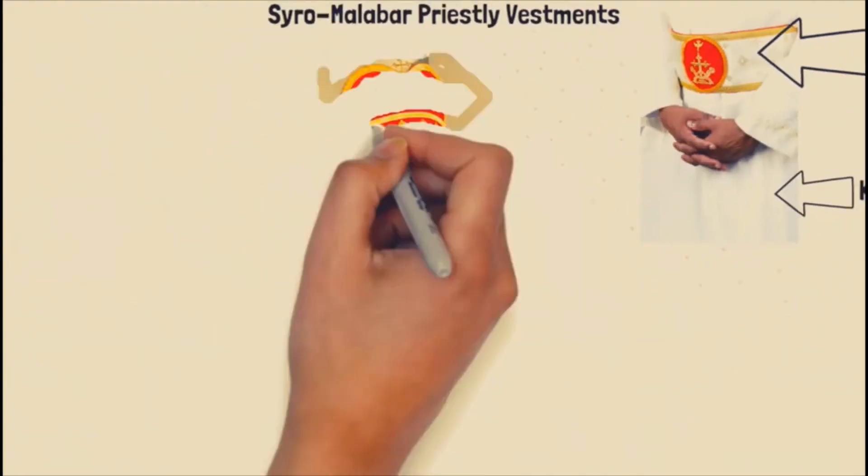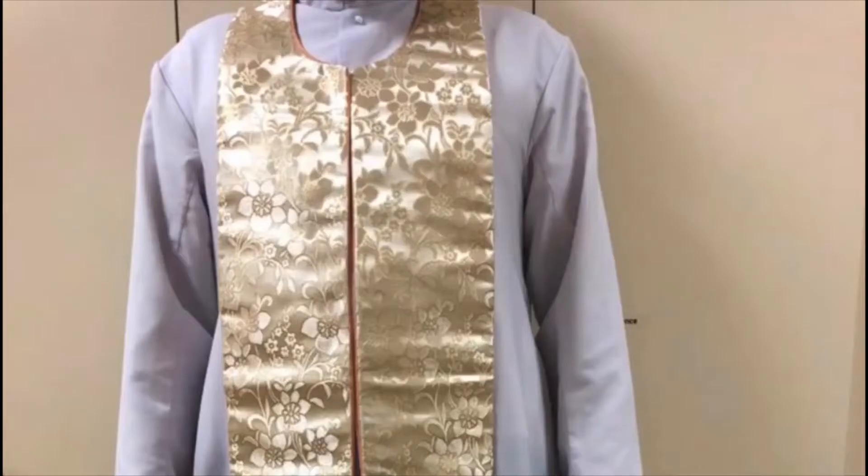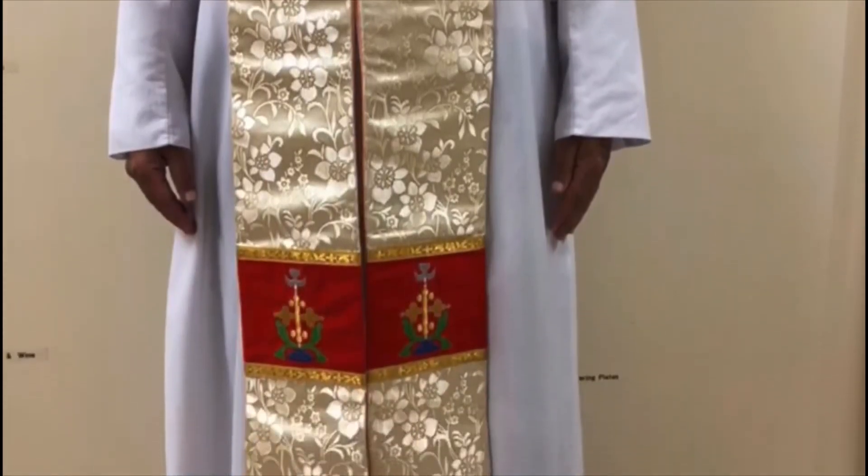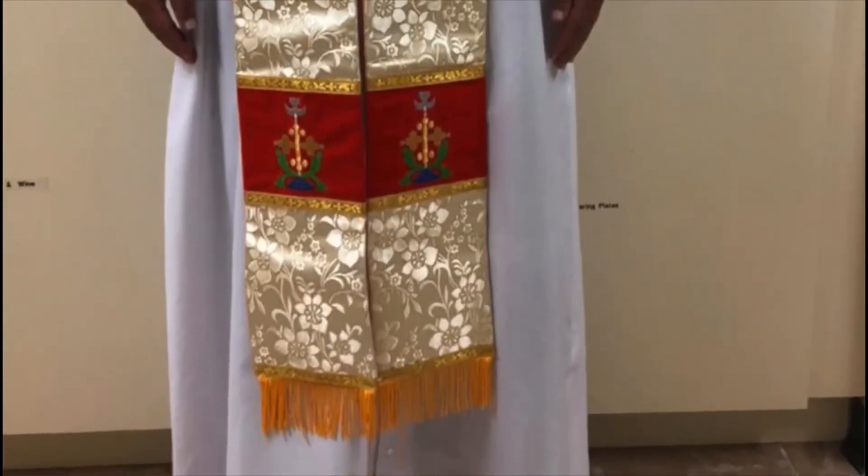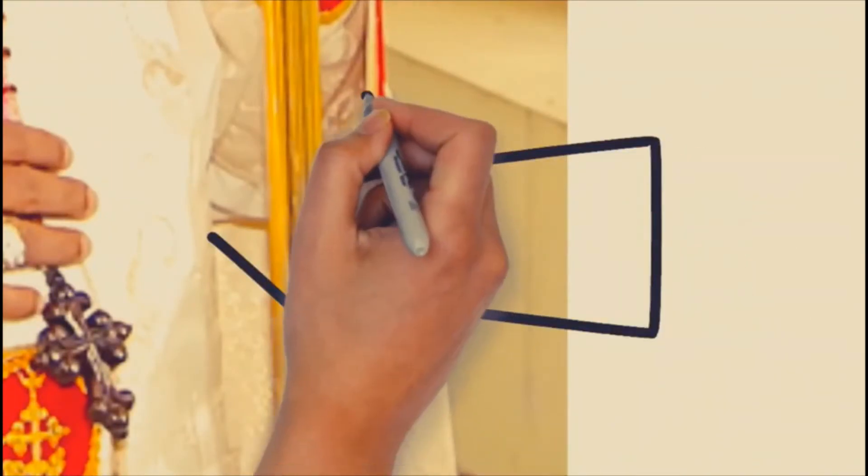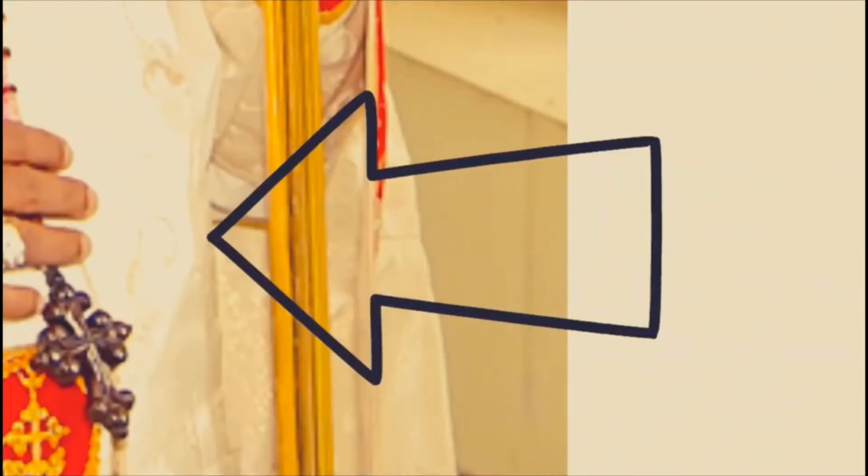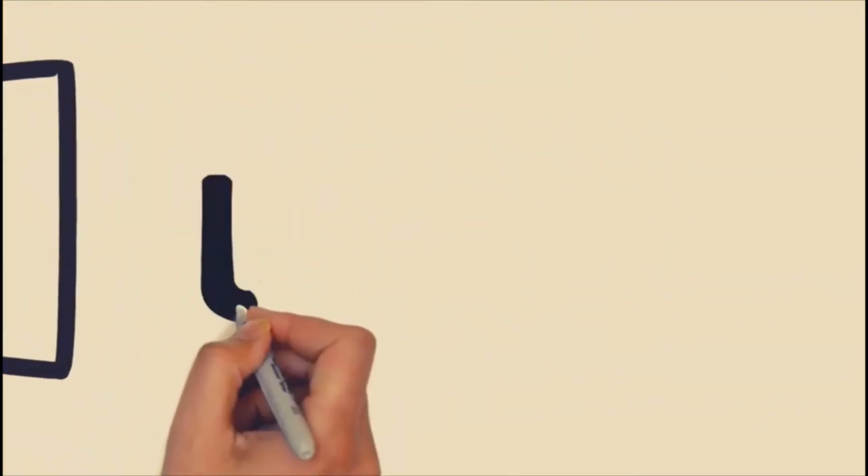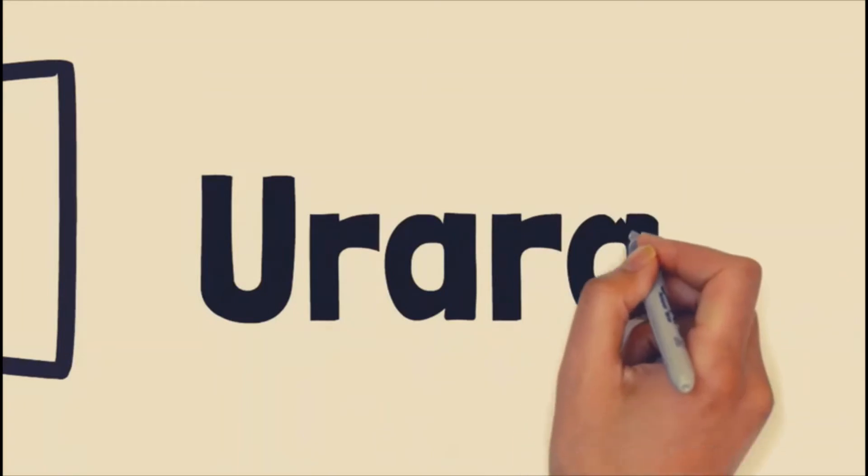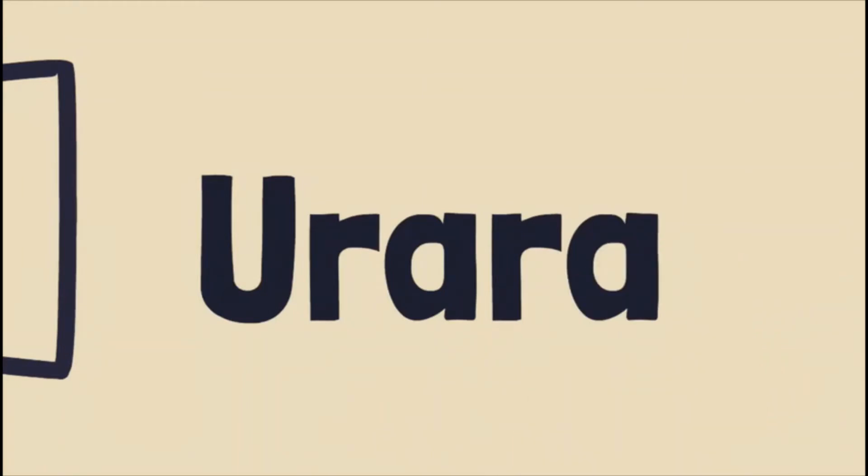Urara. Urara is worn around the neck and extends down over both shoulders on the front side. This represents the priestly authority given to him by God himself to teach, govern, and to sanctify the faithful. It is also a sign that he has chosen for the sacred ministry. It is a symbol of the ministerial priesthood.